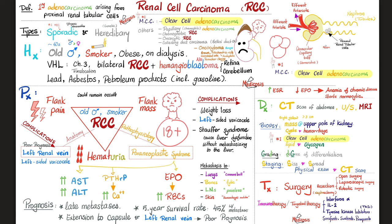Diagnosis: good history, meticulous physical exam, labs, and imaging — ultrasound of the abdomen, CT scan, MRI — then biopsy. The mass usually looks bright yellow, larger than 3 centimeters in diameter, typically at the upper pole of the kidney. There are lots of cysts, bleeding, and necrosis — hemorrhage and necrosis are criteria of malignancy.